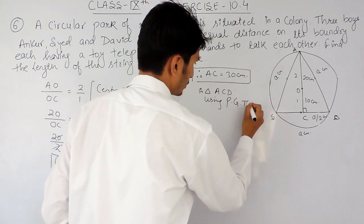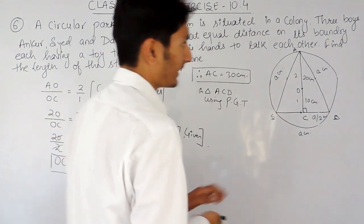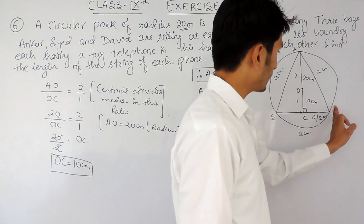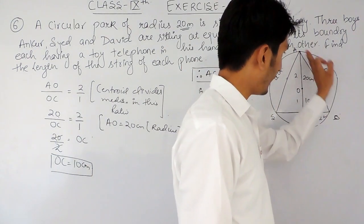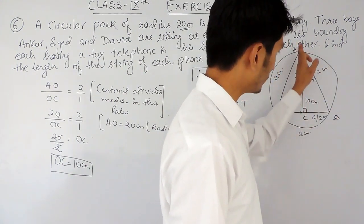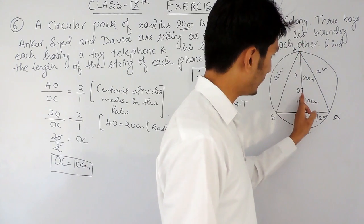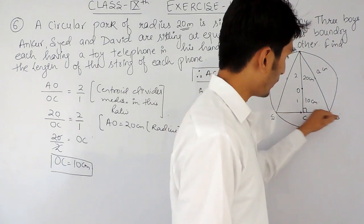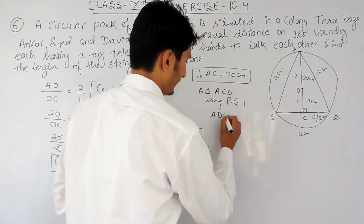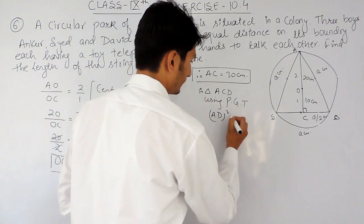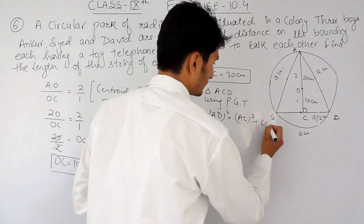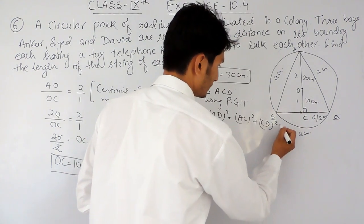Now in triangle ACD, we will use the Pythagorean theorem. In this right-angle triangle, the square of the hypotenuse equals the square of the perpendicular plus the square of the base. So AD² will be equal to AC² plus CD².